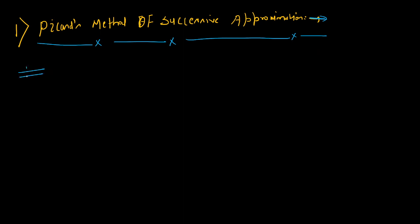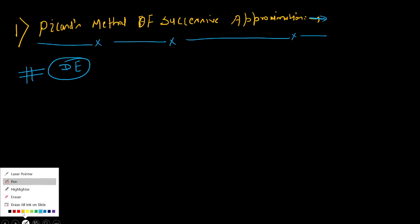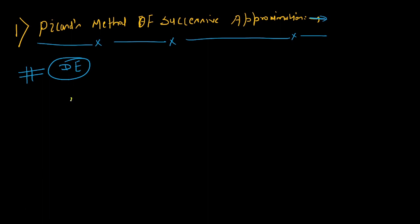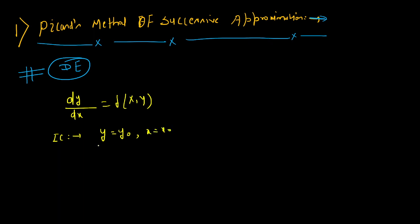Here you will be solving a differential equation. Previously there are various methods of solving differential equations, but here in this method we will be solving by successive approximation. I am assuming the differential equation is of the form dy/dx = f(x, y), and the initial condition is given as y = y₀ at x = x₀.